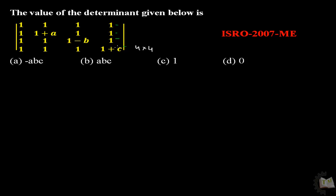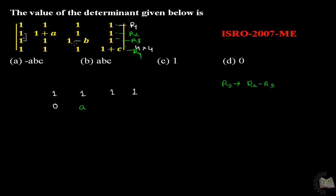This is R1, R2, R3, R4. I will write down R2 = R2 minus R3. Coming to the second row, R2 minus R3 means: 1 minus 1 = 0; 1+A minus 1 = A; 1 minus (1 minus B) = B; and 1 minus 1 = 0.